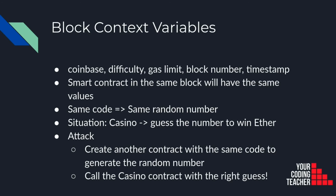Let's talk about context variables. Every block can access certain variables like coinbase, block difficulty, gas limit, the block number, and the block timestamp. All these variables will be exactly the same for every transaction in this block. Imagine you are playing a game where there is a contract called, let's say, casino, that generates a random number every time the contract is called, and this random number somehow depends on one or more of these variables.